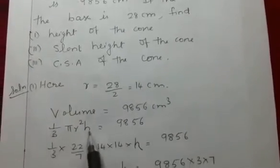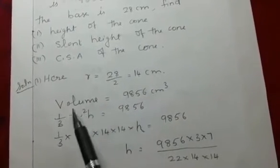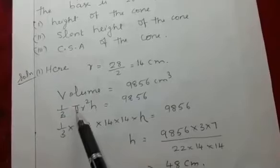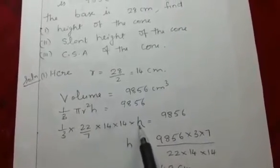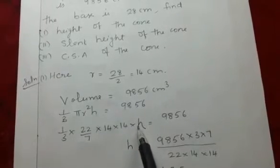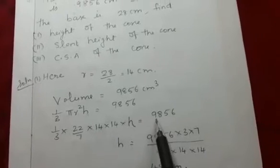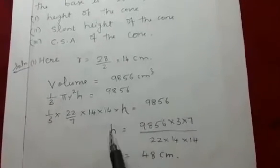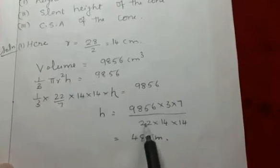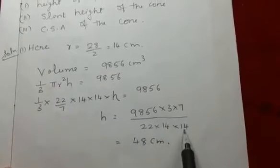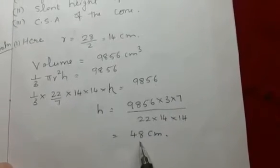Using the formula 1/3 π r² h = 9,856, put the values: 1/3 into 22/7 into 14 into 14 into h = 9,856. So h = 9,856 × 3 × 7 divided by 22 × 14 × 14. By calculating this, we get height equal to 48 cm.